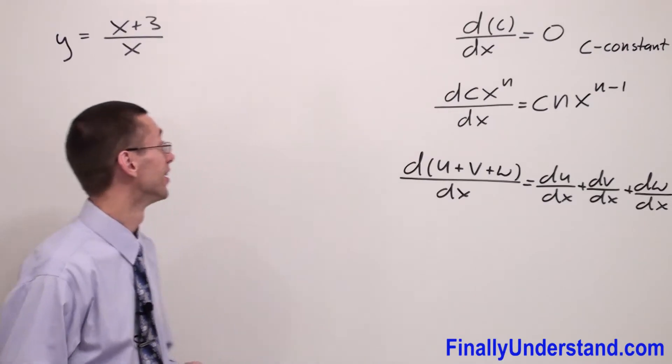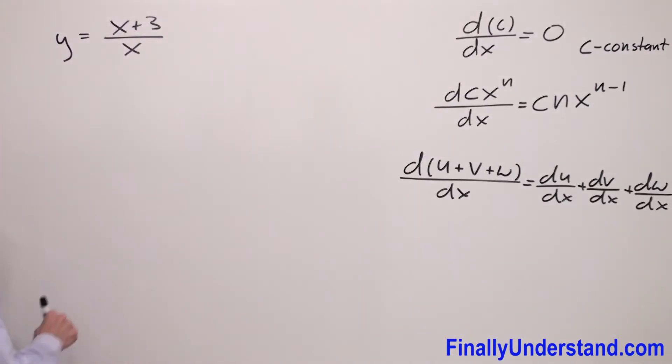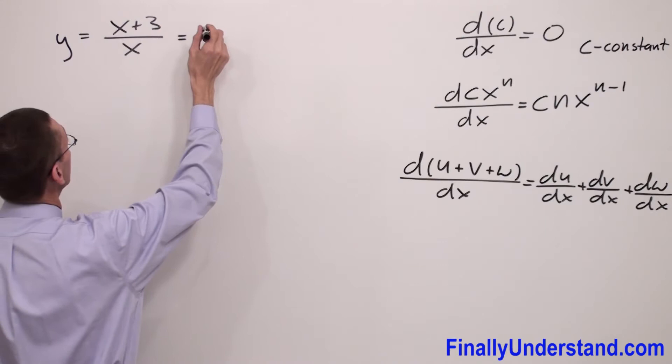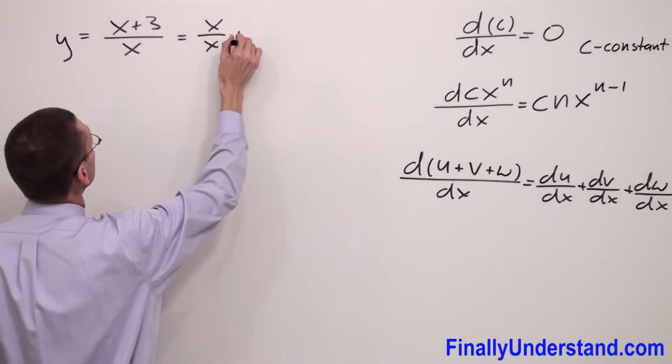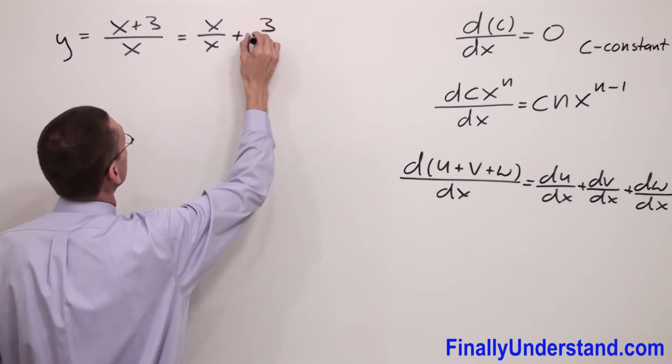Let's take a look at this example. We're supposed to start solving this problem by rewriting this fraction and simply convert one fraction to two fractions and write that this is equal to x over x plus 3 over x.